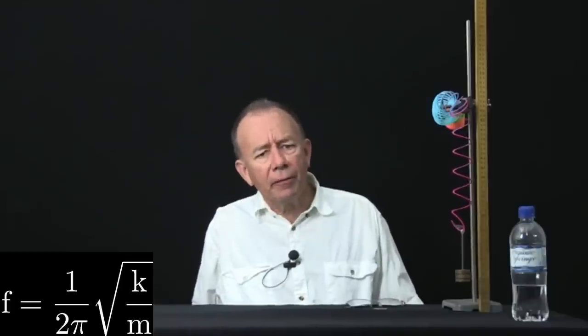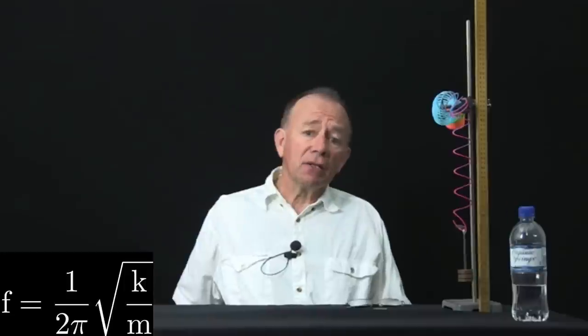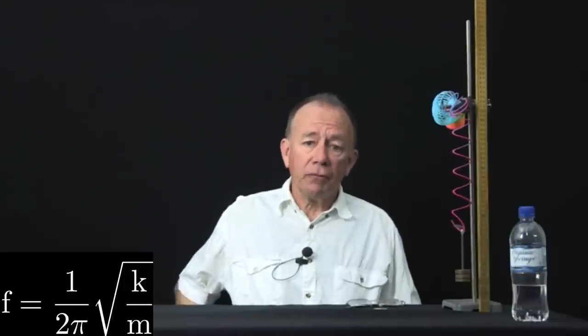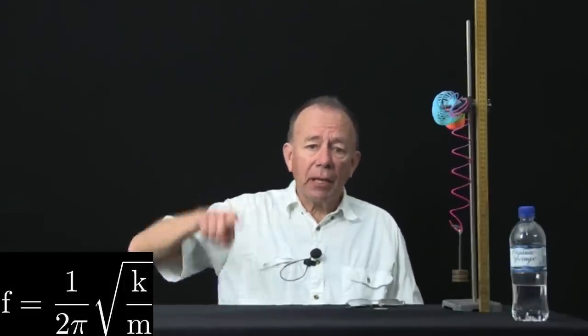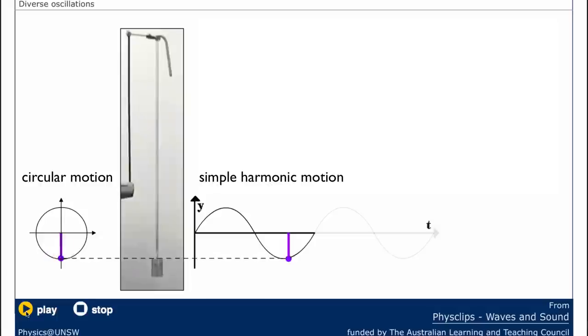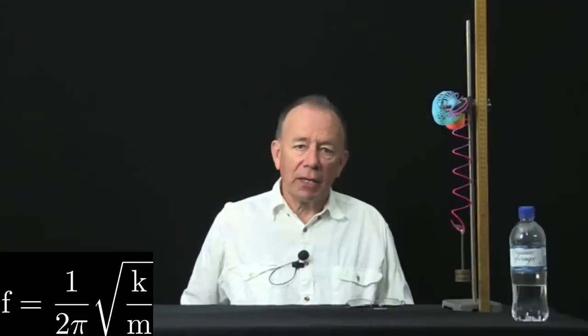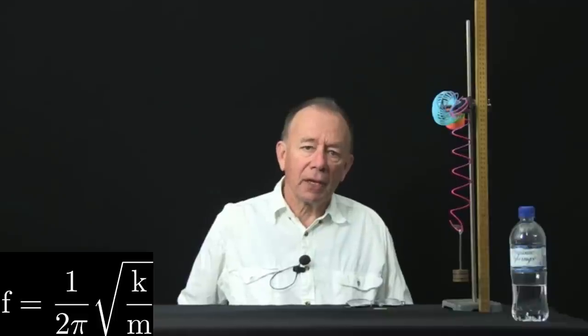Where does that 2π come from? Well, it comes from the cycles. If you like, we can say that simple harmonic motion like this is a projection of circular motion. If you looked at circular motion and you looked at it from the edge, it looks like simple harmonic motion. So, the cycle of a vibration corresponds to one circle of circular motion, and that, in a sense, is where that factor 1 on 2π appears.